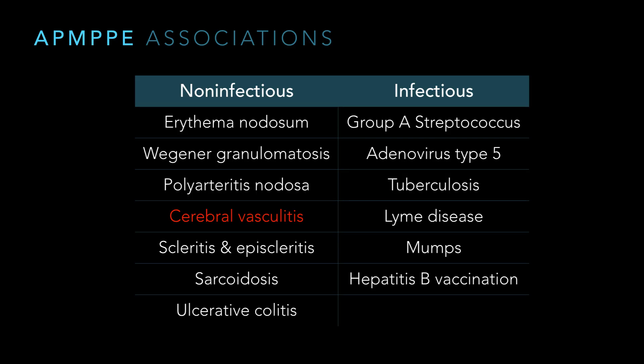AMPPE associations — I don't think these are worth memorizing, but it is important to recognize that AMPPE, as opposed to a lot of the other white dots, has a lot of systemic things going on. We shared a patient that somebody thought was MUDES — turns out it wasn't. She had AMPPE, and it recurred in the same eye, and we initiated a workup. It looks like she's got either some weird microangiopathy-type thing. She does have erythema nodosum. But the point is: look for other things. If it's just the first time and it self-resolves, no big deal, but if it's a little bit unusual or there are other systemic things going on, look around for other stuff.